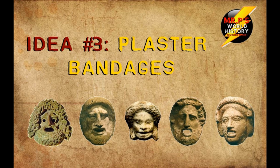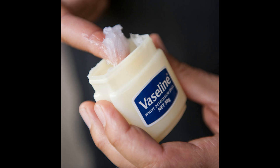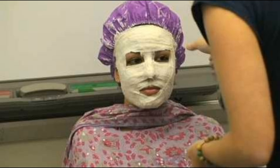Idea number three. This one may get a little bit messy, but in the end turns out the best. Make a mask with plaster bandages, which can be gotten at most art supply stores. By using plaster, you can mold the mask to your face so that it fits perfectly. Before starting the mask, apply a layer of Vaseline around the edge of your face near the hairline, as well as over your eyebrows. Put small squares of dampened paper towel over your eyes, then lie down and have a friend start layering on the plaster bandages by dipping them in water and putting them directly on your face.